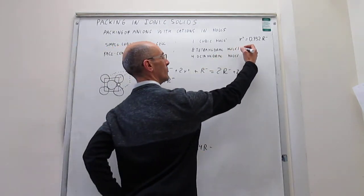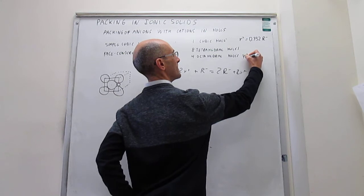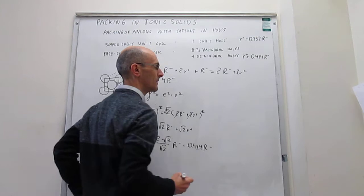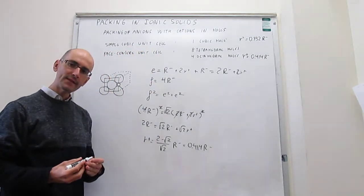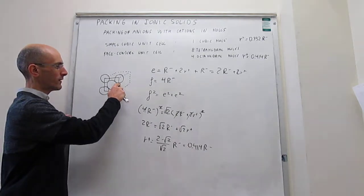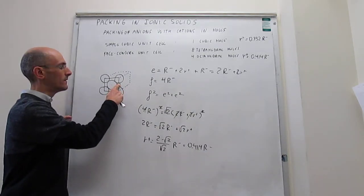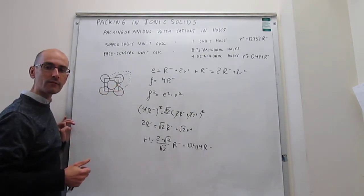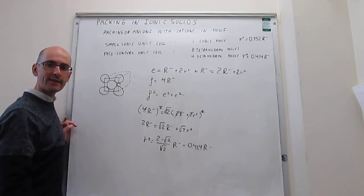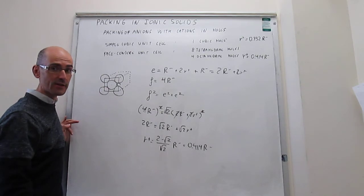And we can put it right here in this list: 0.414R-. So this calculation has the following implication. We want to try to see if we can fit a cation right there. And we now know what the radius of that cation should be as a function of the radius of the anion that acts as the anion in that crystal structure.